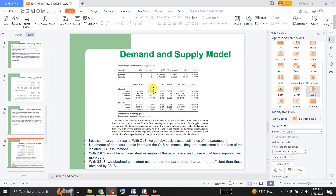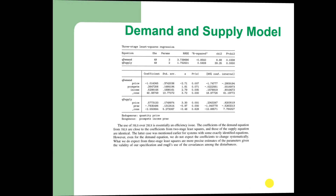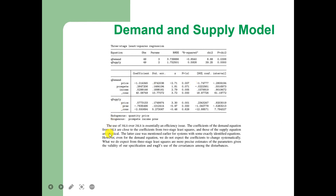This is the same estimation I just did with three-stage least squares. The use of three-stage least squares over two-stage least squares is essentially an efficiency issue. The coefficients of the demand equation from three-stage least square are close to those from two-stage least squares, and those of the supply equation are identical — the latter case applies for systems with some exactly identified equations. What we do expect from three-stage least square are more precise estimates of the parameters, given the validity of our specification and reg3's use of the covariance among the disturbances.